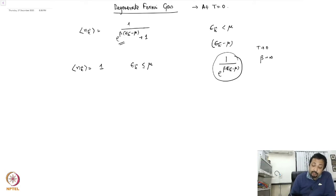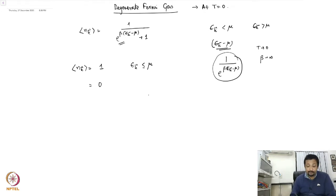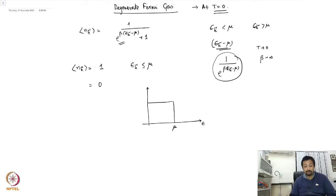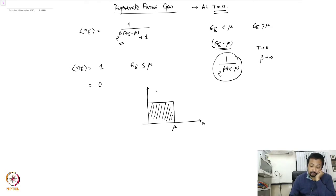By a similar argument, when epsilon_k is greater than mu, this term is positive and the denominator becomes infinitely large, giving you 0. So if you plot the occupation number as a function of energy, all levels up to the chemical potential mu are completely filled at T equal to 0. These completely filled levels define the Fermi sea.